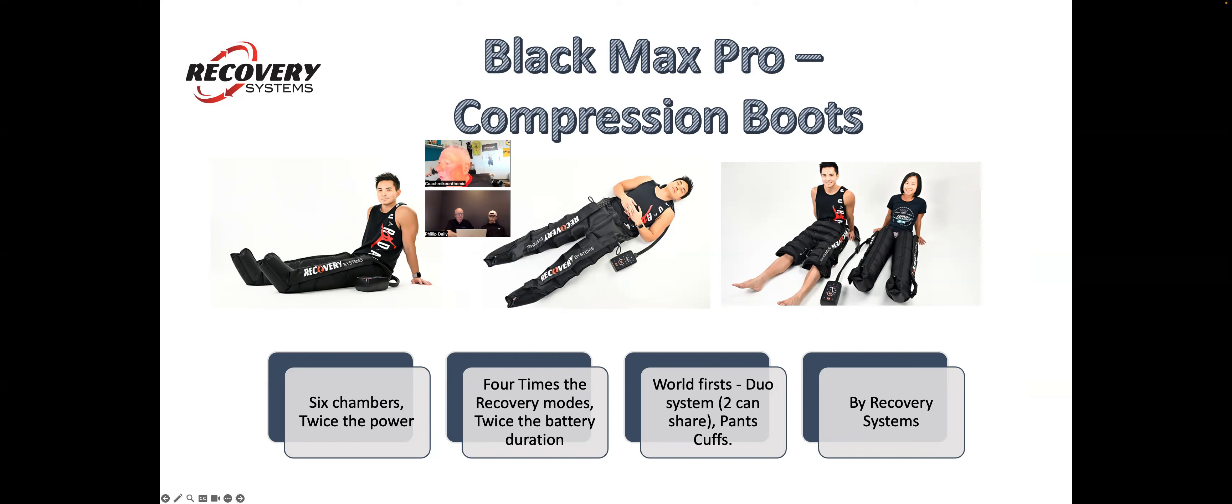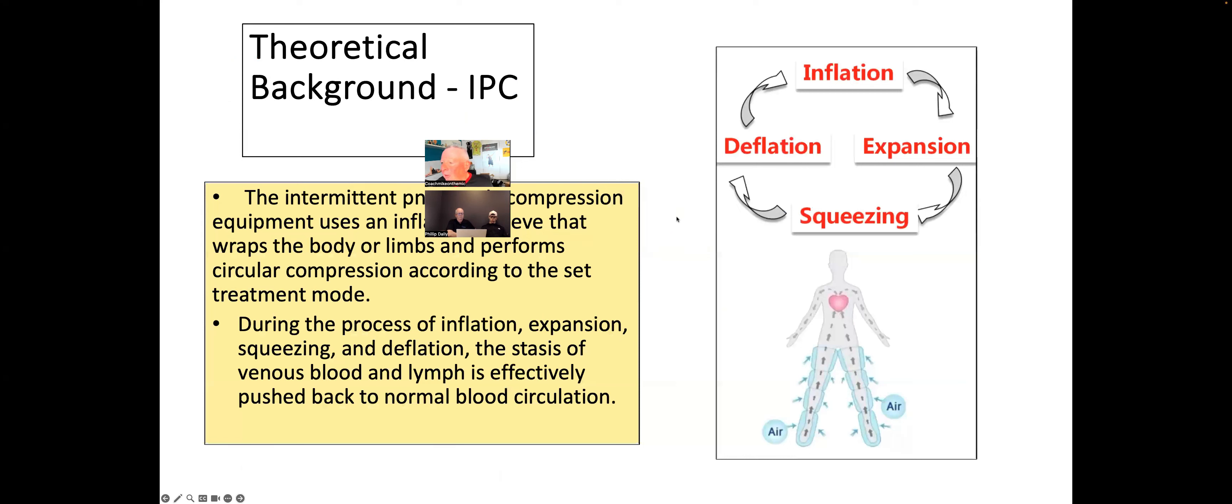There's a few other things that we do. We have the ability to put two people on one machine, which is great for teams, clubs, and families. In this case in the picture, we've got legs on one side, and we've got the shorts or the hip and glute cuffs on the other. So it could be one person using arms and legs, a single use, but two areas being treated.